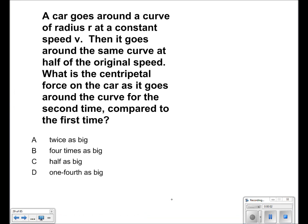So let's write down our values for the first time. We are given that radius has value r and velocity has value v.